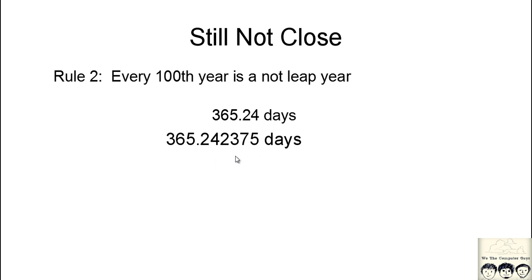We are looking at some difference of 0.002375 days. They felt that this was also not close enough, so they introduced another rule. The difference is 0.95 days per 400 years. Approximately, we are losing one day every 400 years.